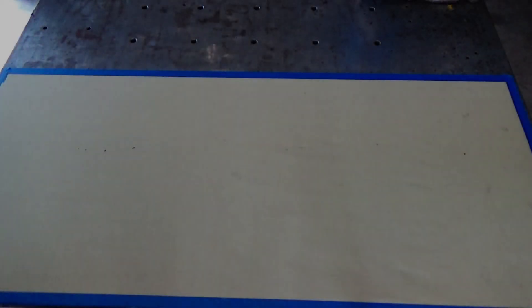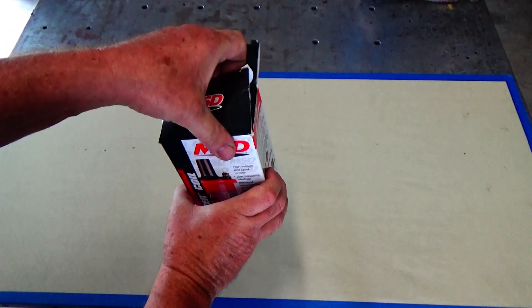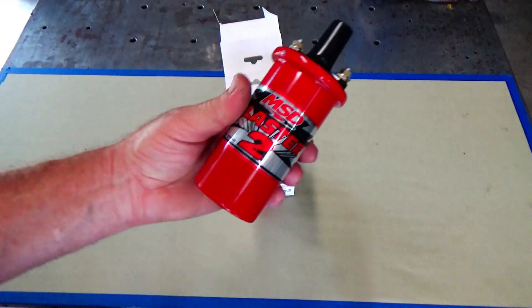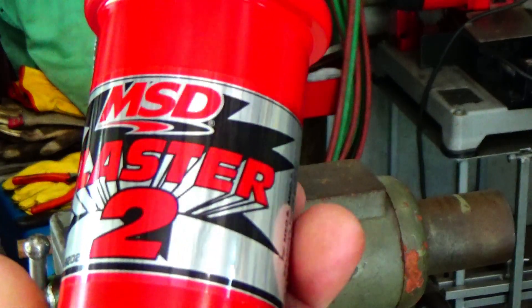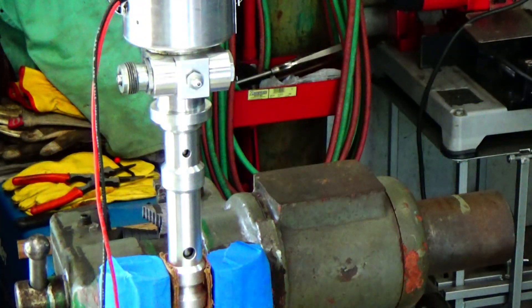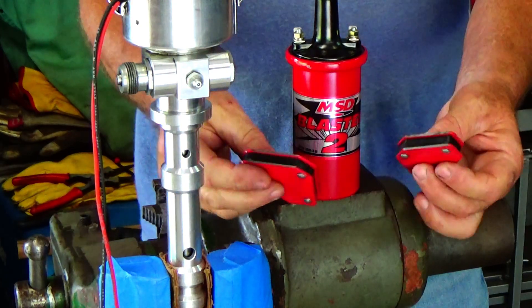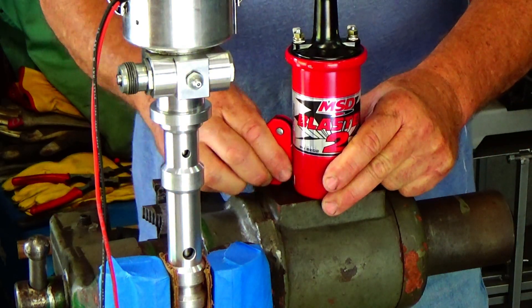Alright, so I'm going to start hooking everything up. I'm going to start with a coil. I need to mount it somewhere. It's one of those MSD Blaster 2 coils. I'm just going to set it over there on the device itself and use a couple of welding magnets I use to hold the stuff in place when I weld. Hold it in place.